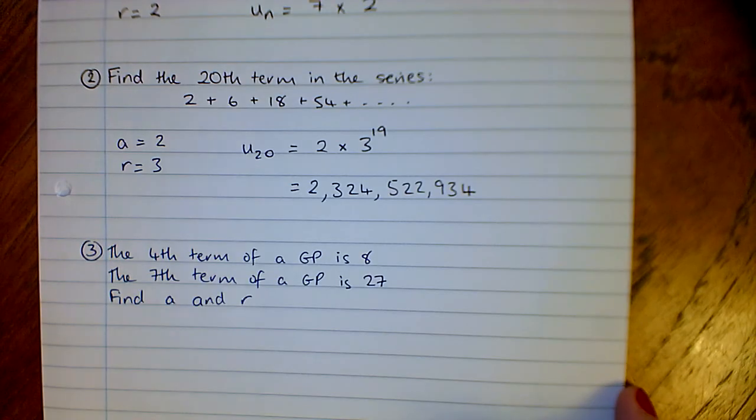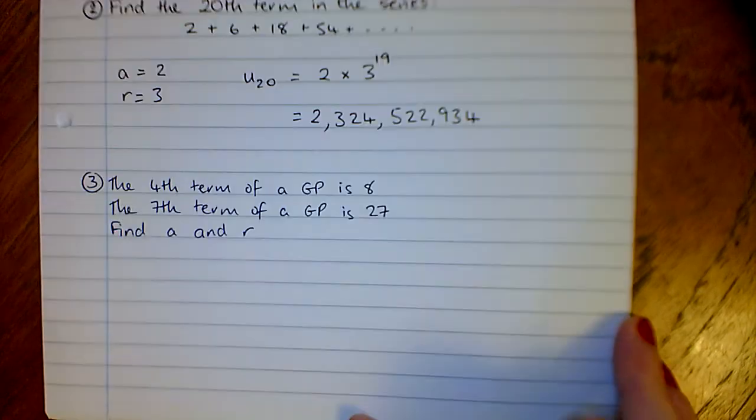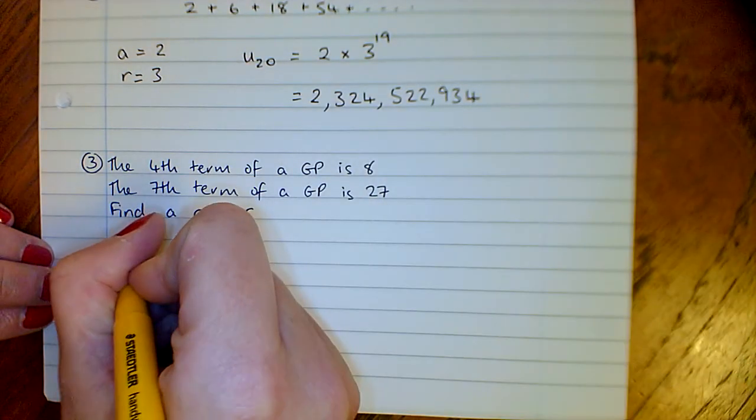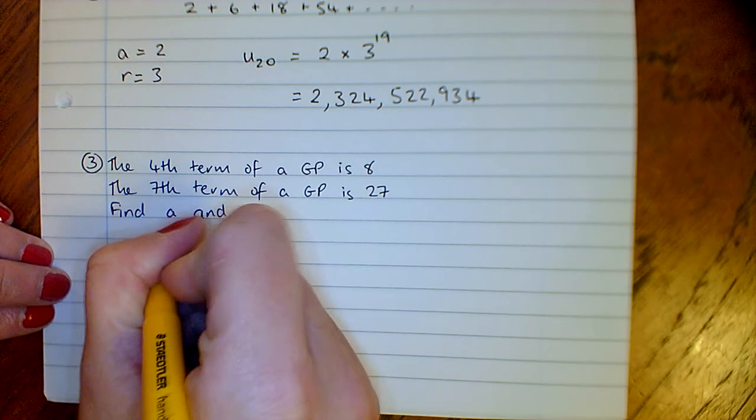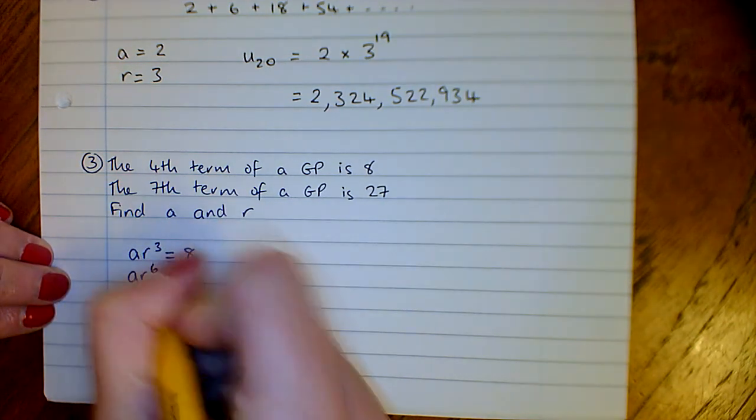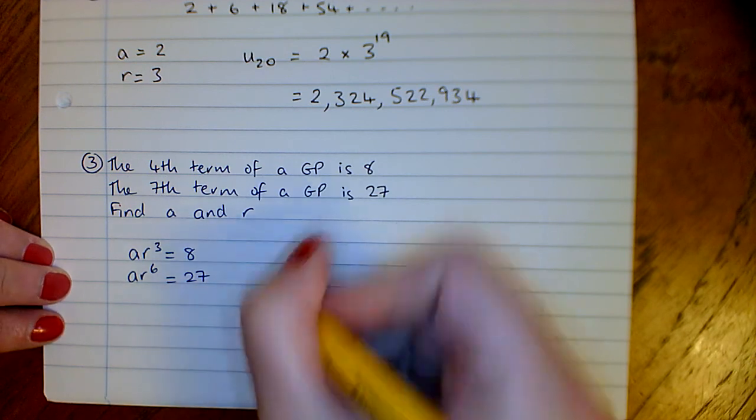Our third one then. The fourth term of the GP is 8, the seventh term of the GP is 27. Find A and R. The fourth term means we've got A times R cubed equals 8, and the seventh term, A times R to the power of 6 equals 27.